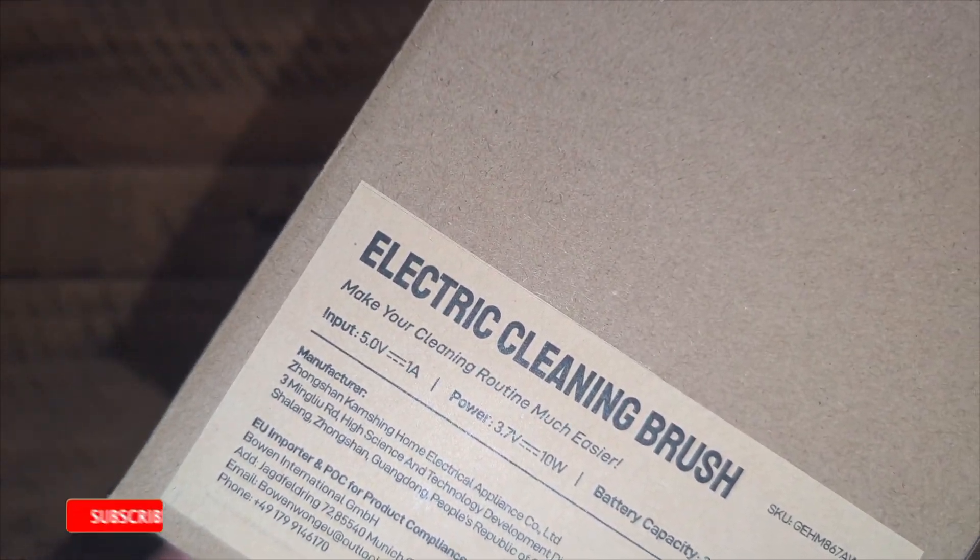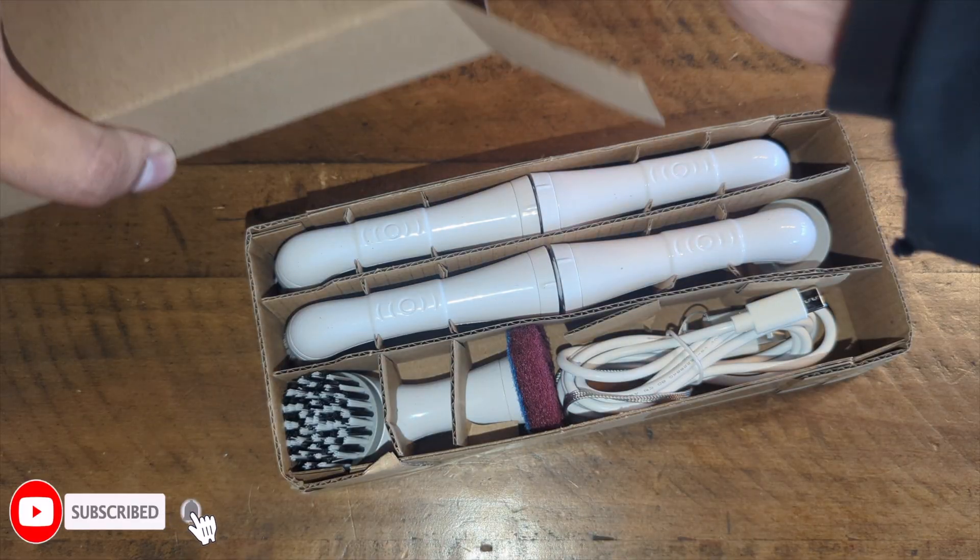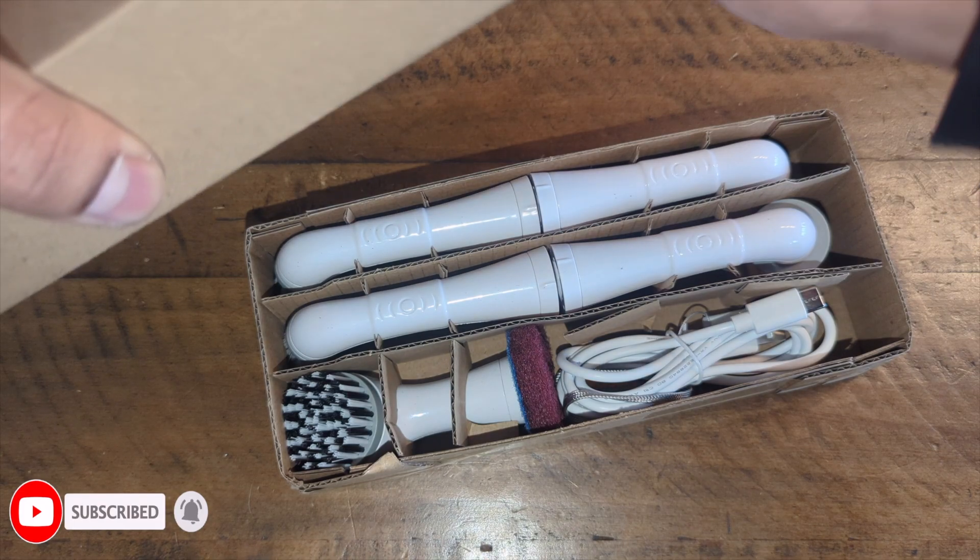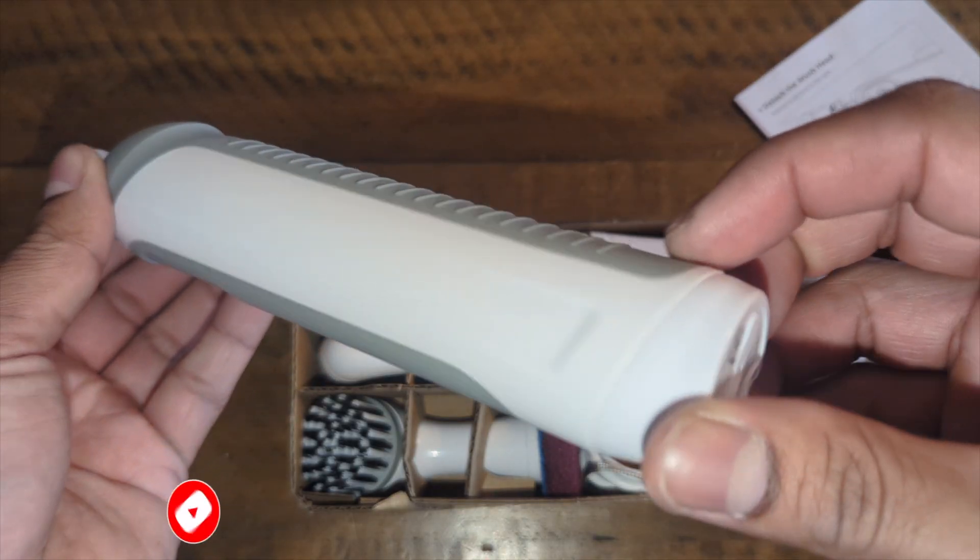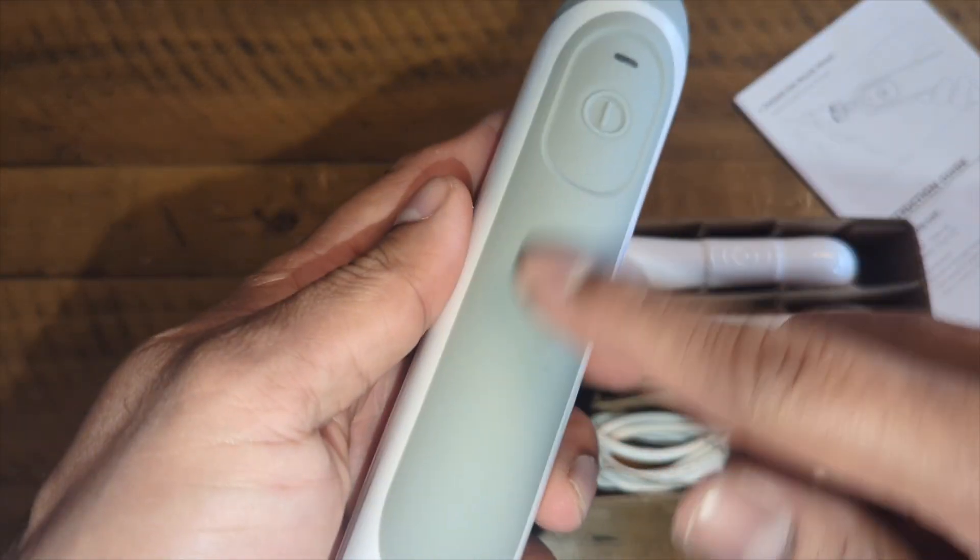We're going to unbox this electric cleaning brush. This thing comes with everything you need to clean. This is the brush itself right here - you can see it's lightweight, beautiful, nice color, like rubber.